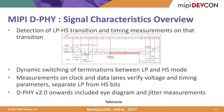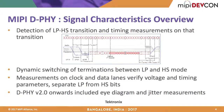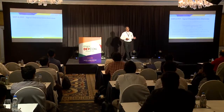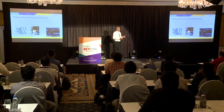For signal integrity measurement of D-PHY, all four signals — DP, DN, CP, and CN — must be acquired simultaneously. D-PHY started at around 800 Mbps and has evolved to 2.5 Gbps. New measurements added in D-PHY include eye diagram and digital measurements in the latest specifications.